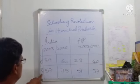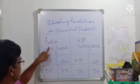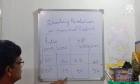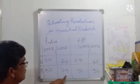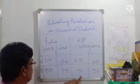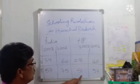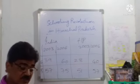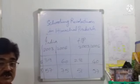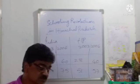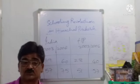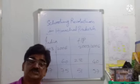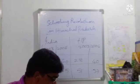For boys: all over India in 2003, 57 boys were coming to school; in 2006, this increased to 75. In Himachal Pradesh alone, in 2003 it was 51; and by 2006 it reached 57. In this way, the schooling revolution in Himachal Pradesh brought a lot of changes.